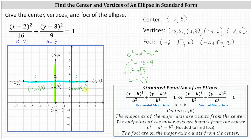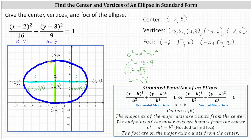Now let's go ahead and sketch the ellipse passing through the four vertices. I hope you found this helpful.